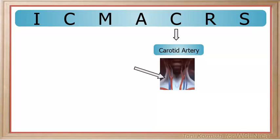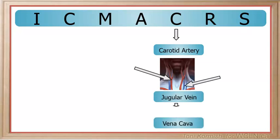C is for the carotid artery, which carries freshly oxygenated blood from the aorta to the head. The corresponding vein is the jugular vein, which carries spent blood back to the vena cava.